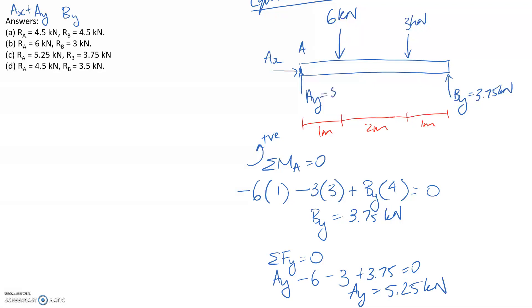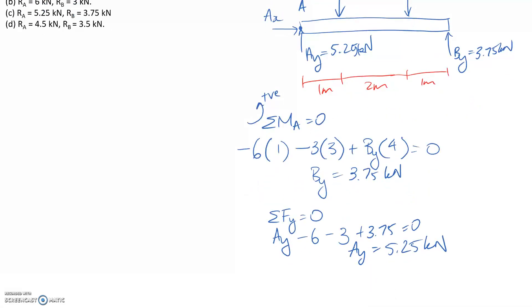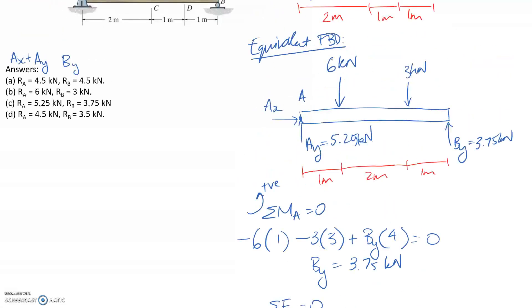The only other thing is Ax, and this one's pretty easy. Since we have no other forces in the x direction, Ax is going to be equal to 0. So that means that the resultant at A or RA is just going to be directly equal to whatever Ay was, which was 5.25. So that's going to be this answer in here. That's all there is for this question. And just note that the next question actually follows on from this one.